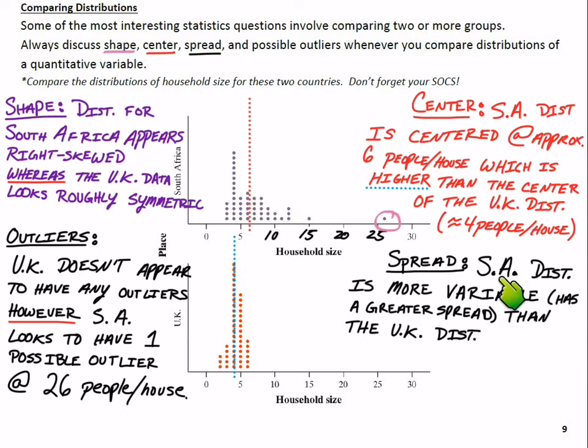We can say the South Africa distribution is more variable. Right? That's that stats phrasing, stats terminology. It's more variable. AKA, it has a greater spread than the UK distribution. And since we're AP statisticians, we can actually back that up with a little bit of data from the graph. Not only is it more variable, but let's give some values here as well.